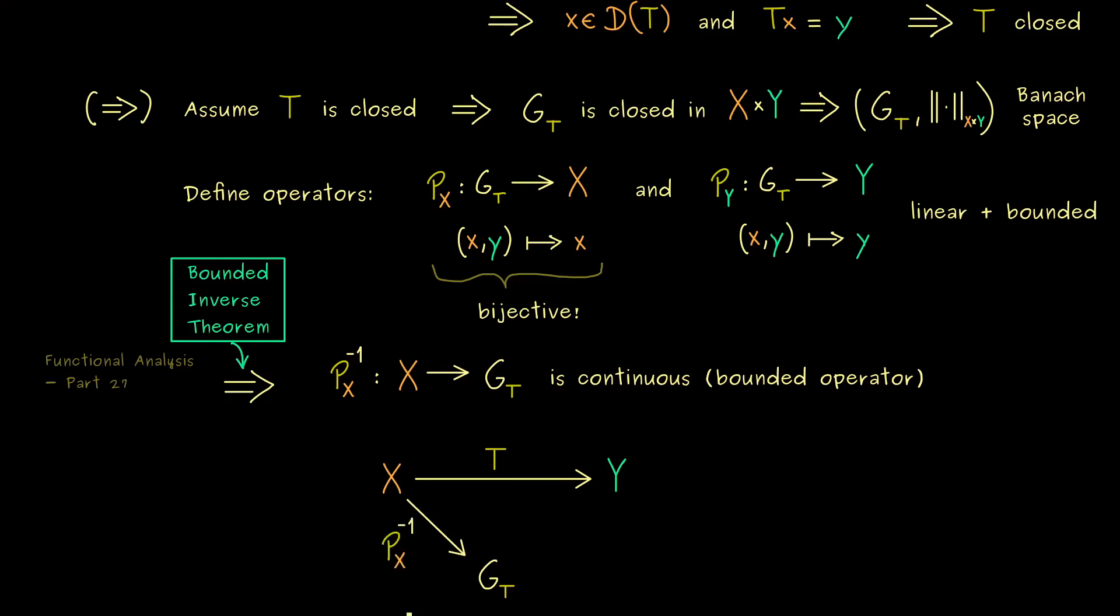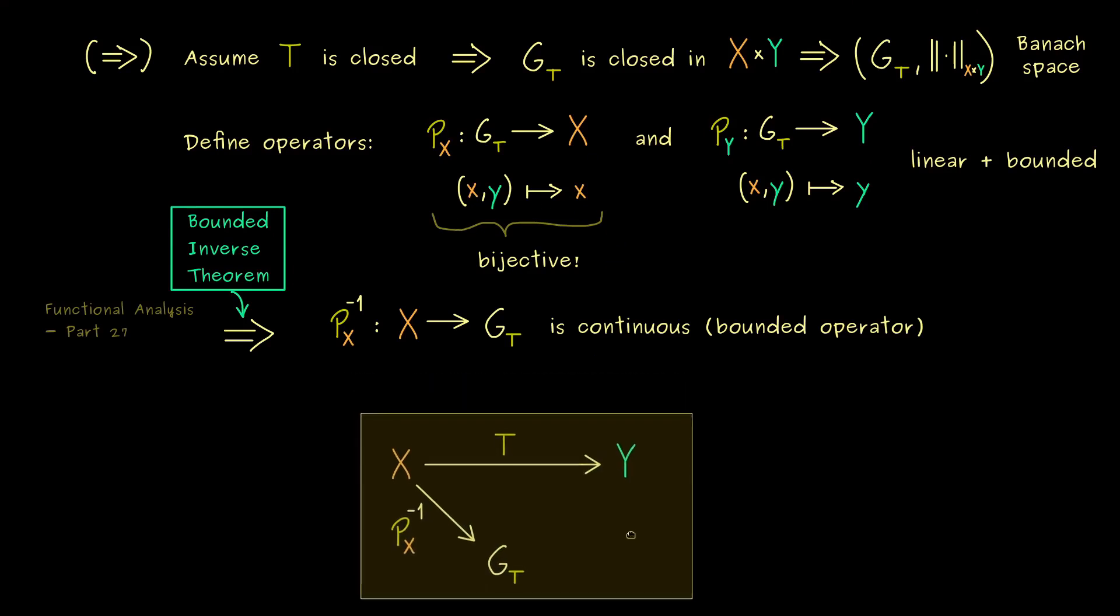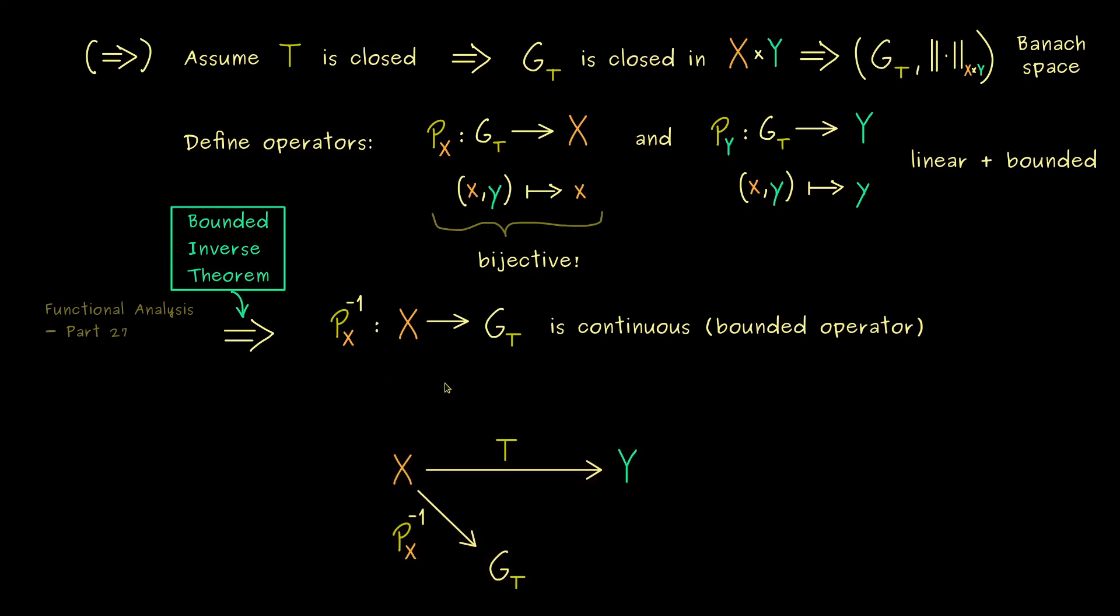And here you should know by definition it sends a point x to the pair (x,Tx). So maybe that's also something we should write down here. And at this point we already see that p_X inverse achieves more or less the same as the operator T. The only thing we have to do then is to project back to the space Y. And this of course we do with our operator p_Y and what we get is Tx in the end.